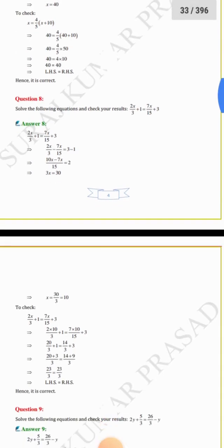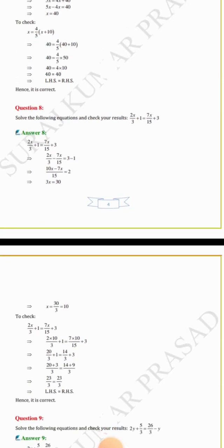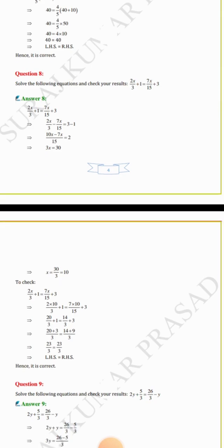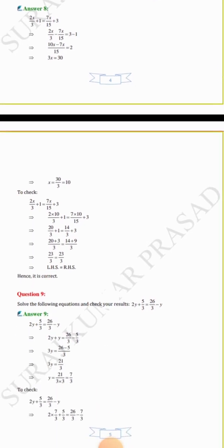Question number 8: solve 2x/3 + 1 = 7x/15 + 3. Rearranging: 2x/3 minus 7x/15 equals 3 minus 1 equals 2. Taking LCM of 3 and 15 gives (10x − 7x)/15 equals 2, so 3x equals 30, giving x equals 30 by 3, and the value of x is 10.